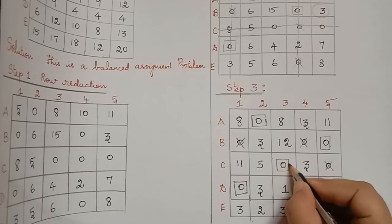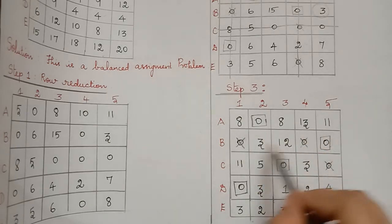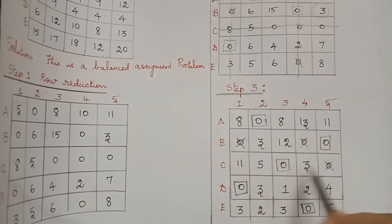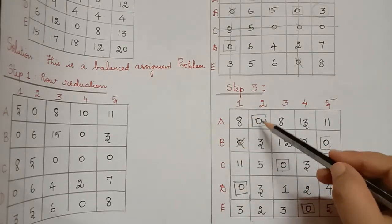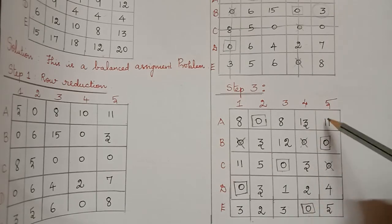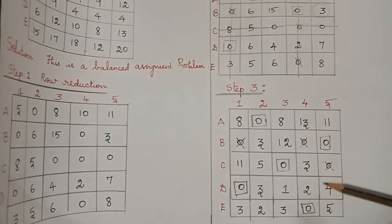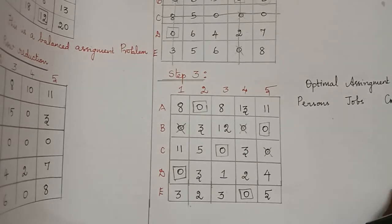After selecting this zero, we find that all rows have a zero selected for them, and similarly all columns also have a zero selected. We shall now write the optimal assignment.